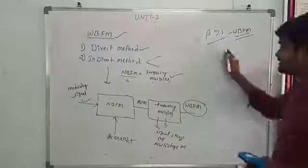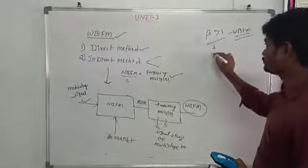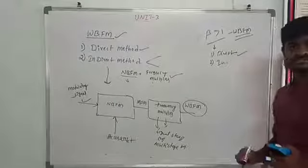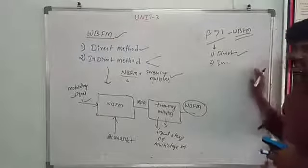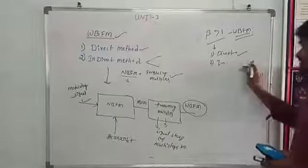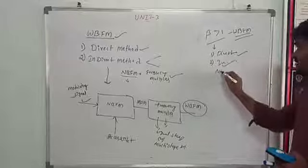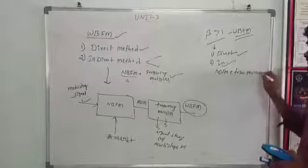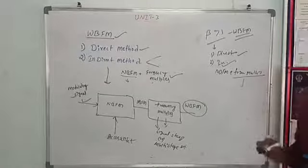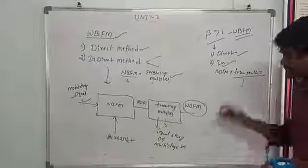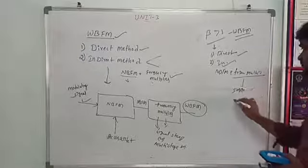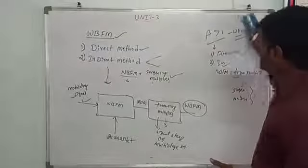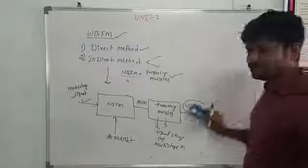The bandwidth of wide band FM is very large. We generate it using two methods: direct method and indirect method. In the direct method, we use a voltage controlled oscillator which generates oscillations depending on the amplitude of the message signal. In the indirect method, we first generate narrow band FM, then add a frequency multiplier to increase the number of frequencies. This is the generation of wide band FM.